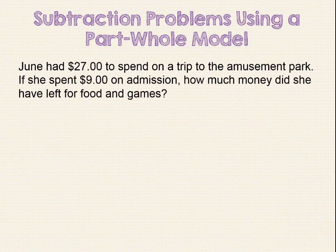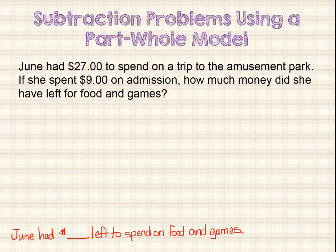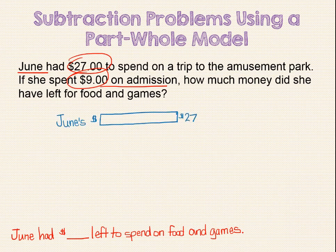Since we need to find out how much money June had left for food and games, our sentence statement can be: June had blank dollars left to spend on food and games. When re-reading the problem, we identify the important information we need to solve the problem. We can start our model with a unit bar for June's money, which is $27.